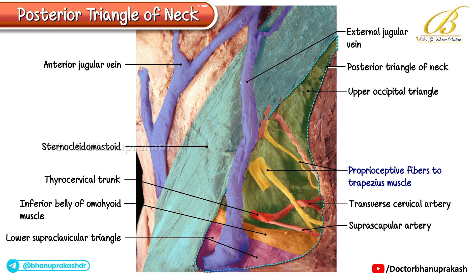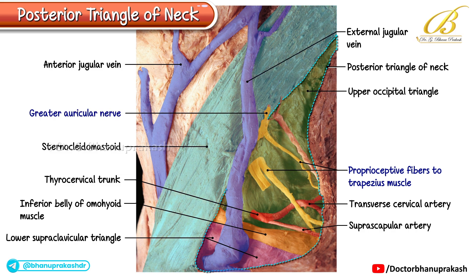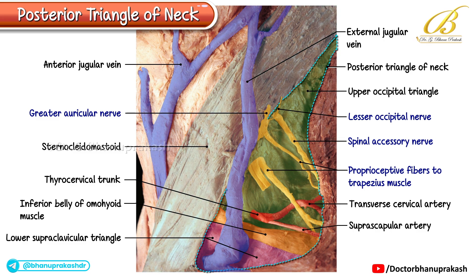Emerging along the posterior border of the sternocleidomastoid are the greater auricular nerve, the lesser occipital nerve, and the spinal accessory nerve. The anterior jugular vein lies close to the anterior border of the sternocleidomastoid, while the external jugular vein crosses anteriorly over the surface of the sternocleidomastoid.